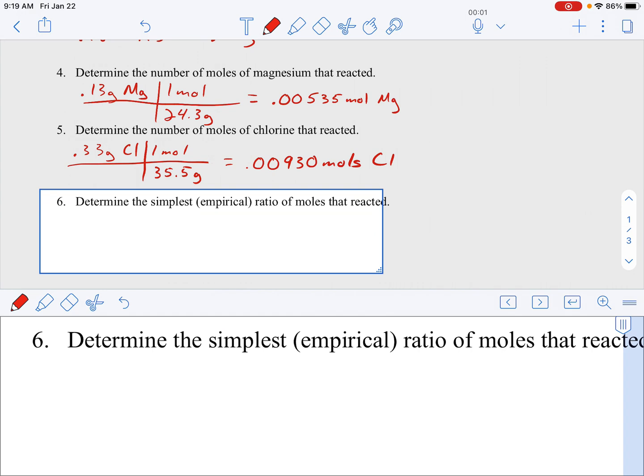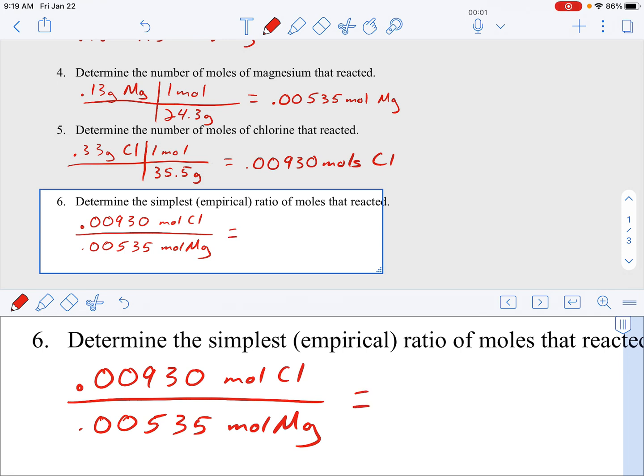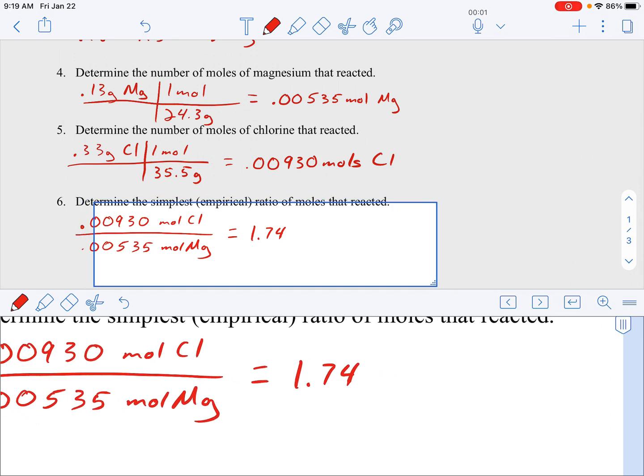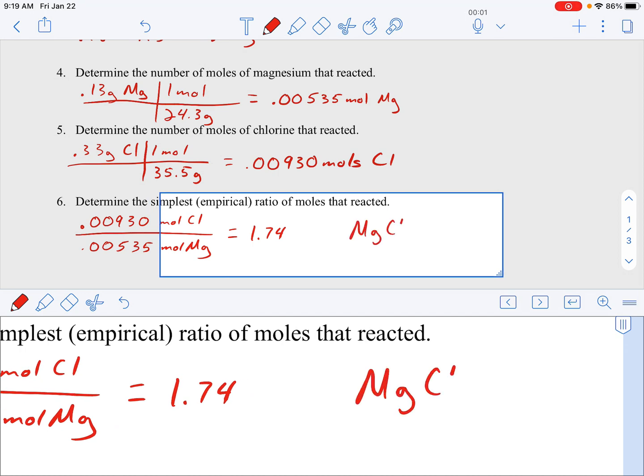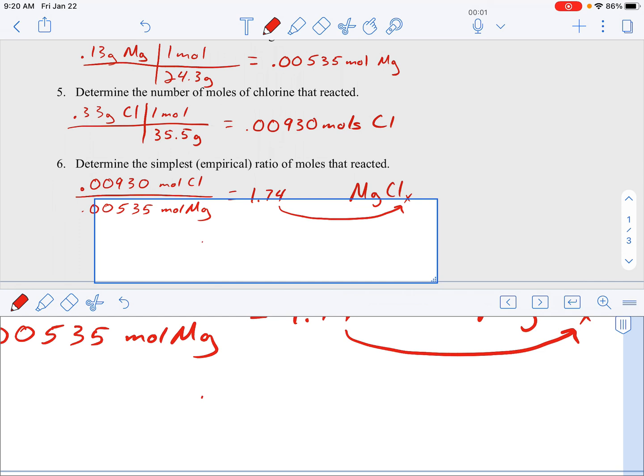Then what we want to do in question number six, this is our final answer here, really. We want to try to figure out that formula, that ratio. So it's simply going to be moles of chlorine over moles of magnesium. So 0.00930 moles of chlorine over 0.00535 moles of magnesium. I chose magnesium as the denominator because it's the smaller number. And so this equals 1.74. That's a ratio, so there's not a unit on that. But what that becomes is my x in that formula. So MgClₓ. That 1.74 becomes that x. So what's my formula here in my problem? MgCl₁.₇₄.